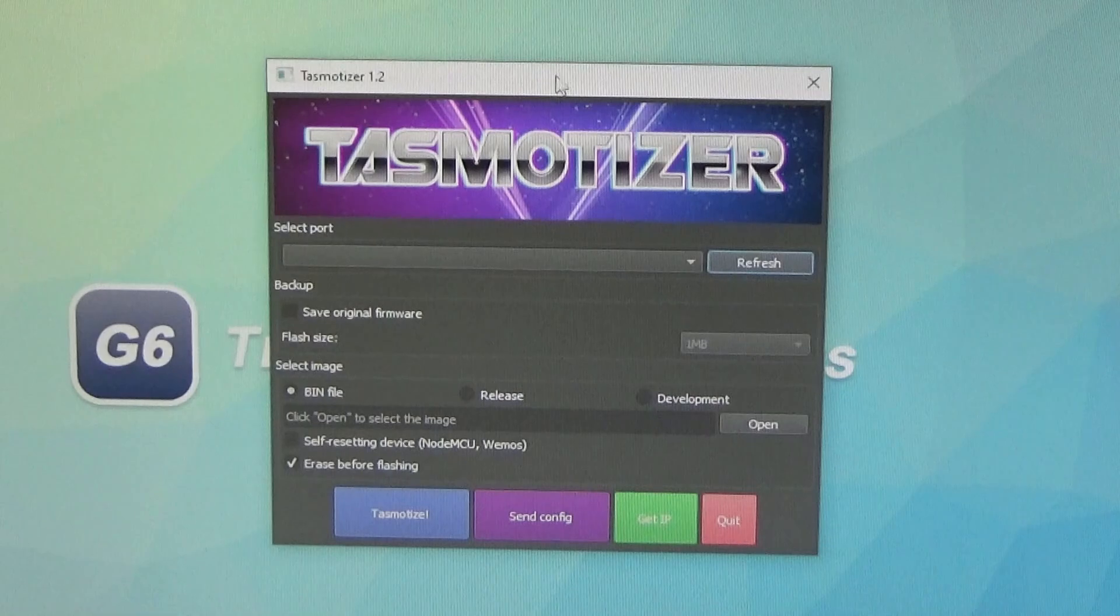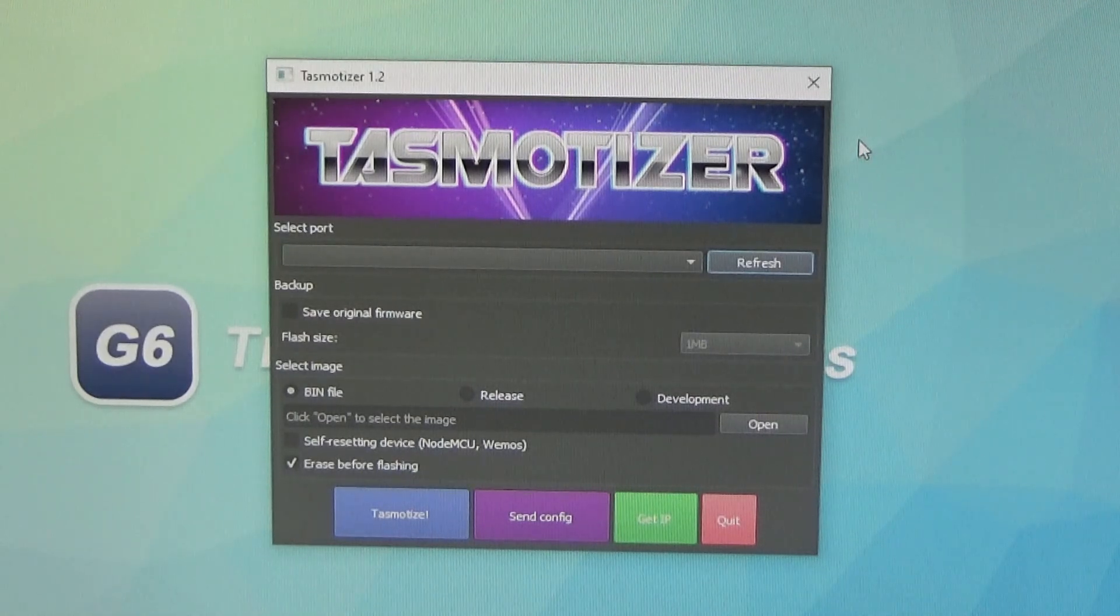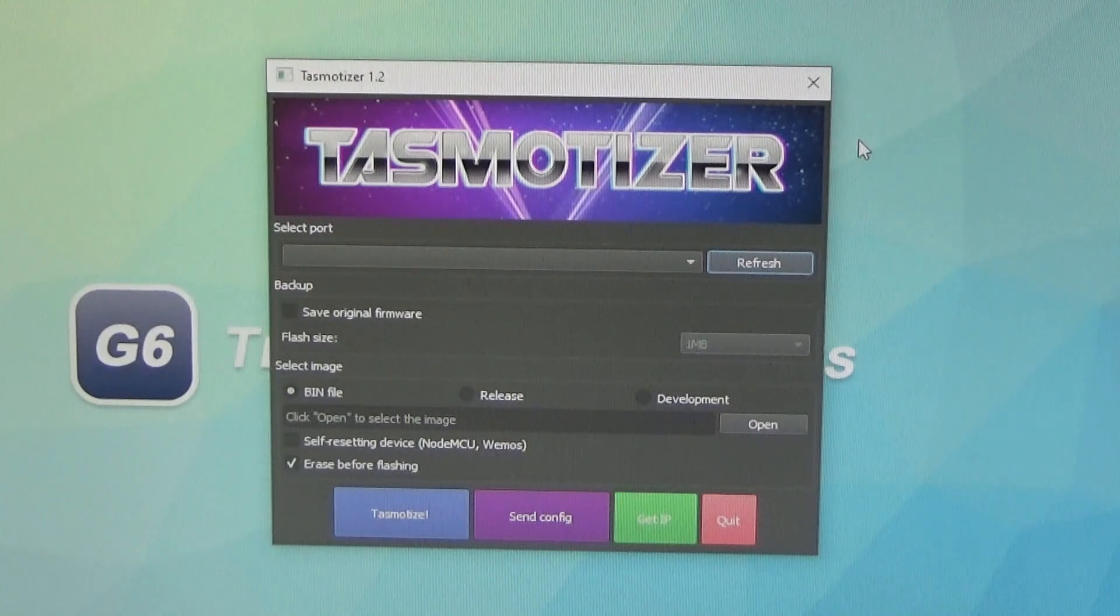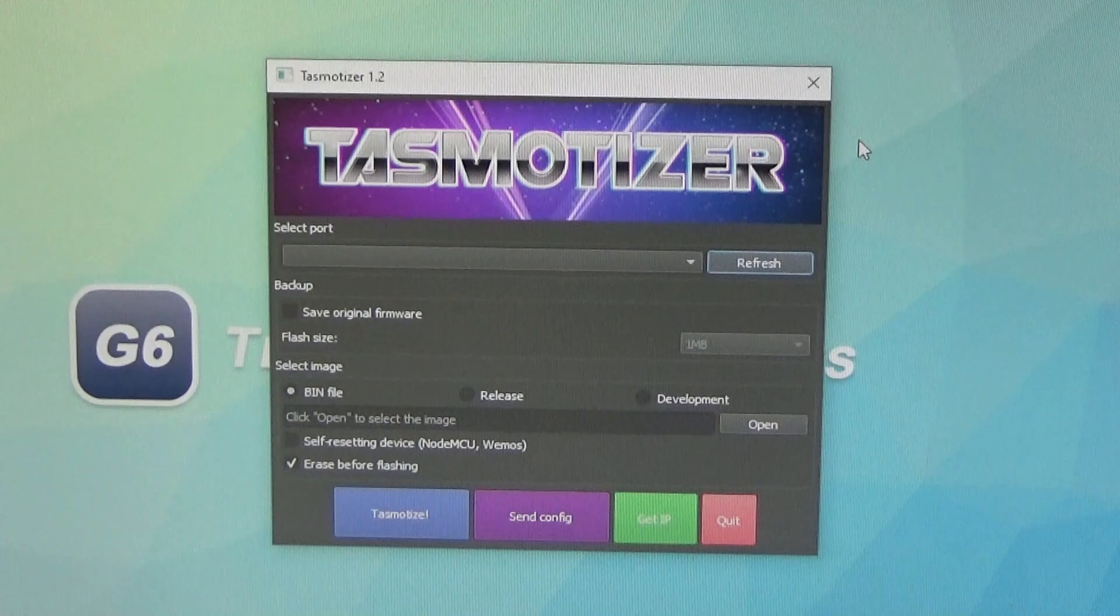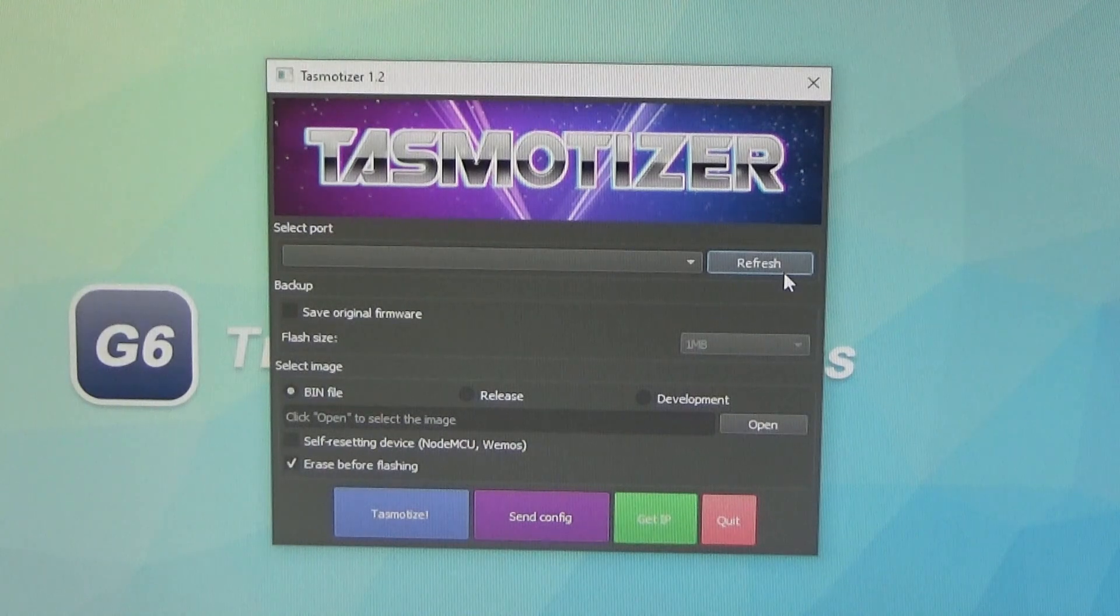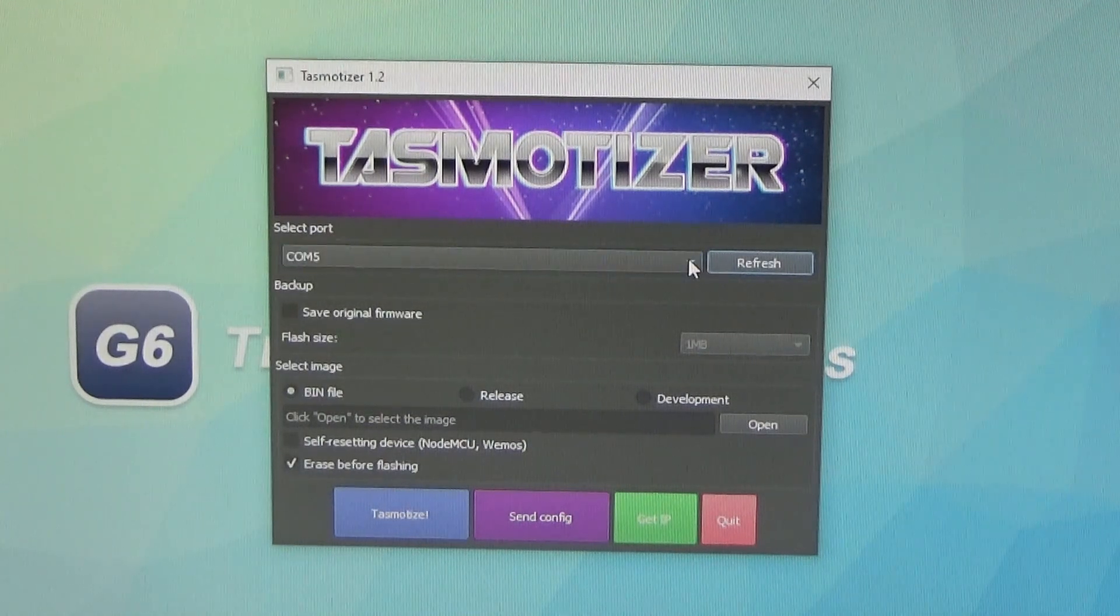So we're going to be using this piece of software called TASMOTIZER. It's available for download. If you go to the Tasmota website, they will link to it. You can download it. And then once you connect your Sonoff to the serial to USB adapter and plug that into the computer, launch the program. And then where it says select port, just click refresh. And here we go. We have COM5 selected.